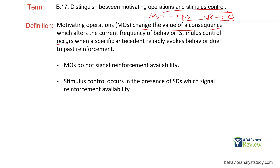MOs do not signal reinforcement availability — this is a key idea. Just because you want something doesn't mean it's available. Stimulus control occurs in the presence of SDs, which do signal reinforcement availability. MOs, just because they alter the value of a consequence, do not signal the availability of that consequence. SDs, which are related to stimulus control, actually signal reinforcement availability.